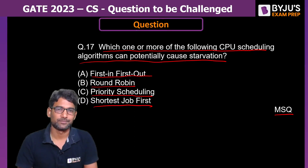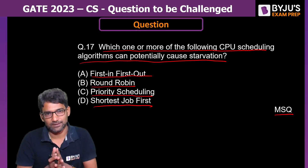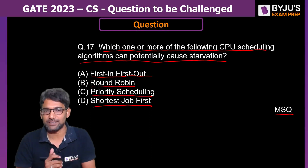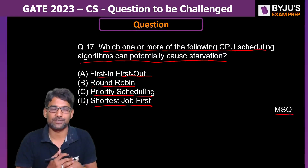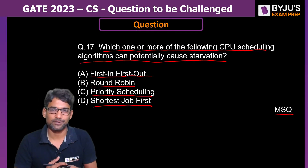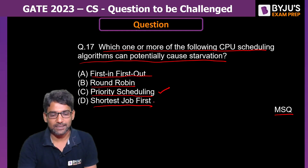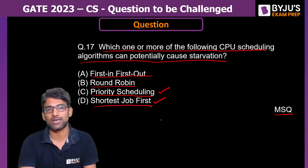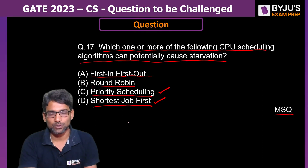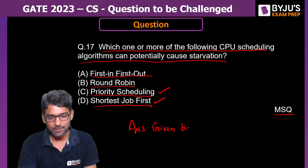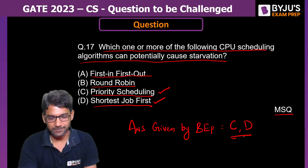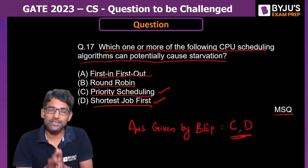To understand the answer, first let us define starvation: when a process is waiting for a longer time — indefinite waiting — because of other processes, we call it starvation. For this question, the answer given by our coaching (USE Exam Prep) is Priority Scheduling and Shortest Job First — options C and D — as these two can cause starvation.